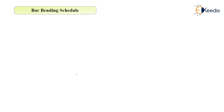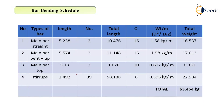So you have an idea of what BBS or bar bending schedule is. It is simply the details of your steel reinforcement — how a particular bar should be cut, how the particular bar should be placed at the site. All these details are given in the bar bending schedule. I will now show you a format of BBS.